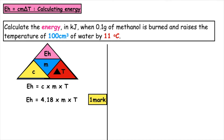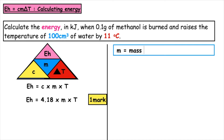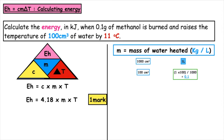We then have to look at the mass of water. We can see that the mass of water given is 100 centimetres cubed, which is not in the correct units of litres, so we have to do a unit conversion. 100 centimetres cubed gives us 0.1 litres. We are also given the change in temperature directly as 11 degrees, so there's no need to calculate that. That whole substitution together gives you the second mark.